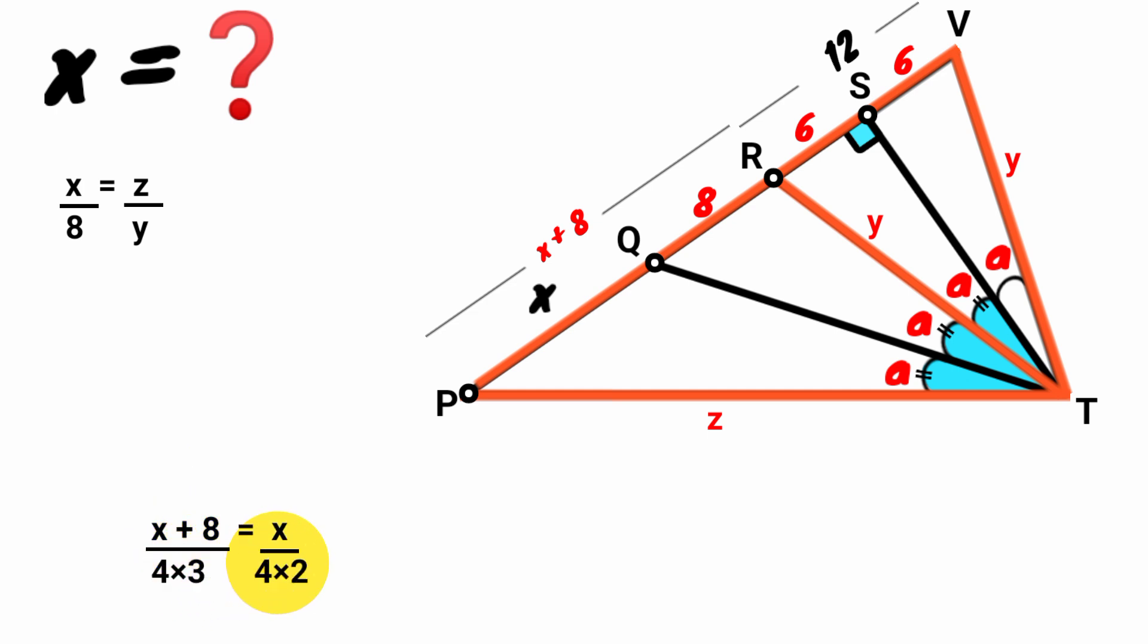This 12 is 4 times 3, and this 8 is 4 times 2. This 4 cancels this 4, so x plus 8 all over 3 equals x over 2. Cross multiply.